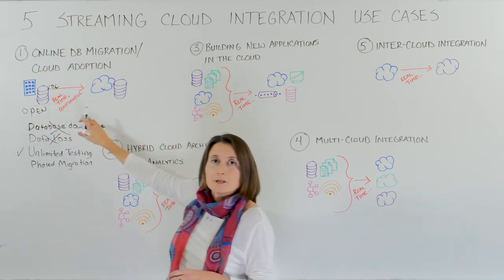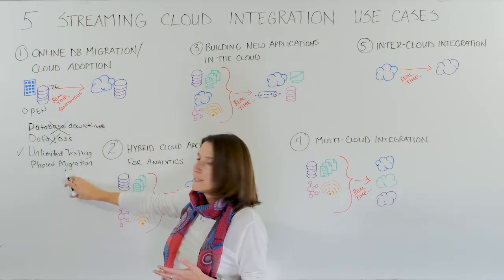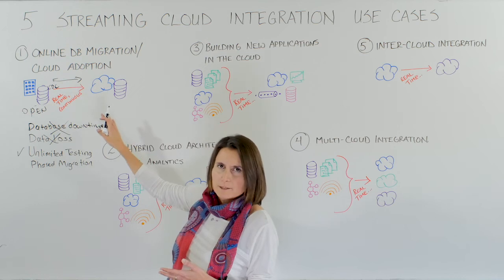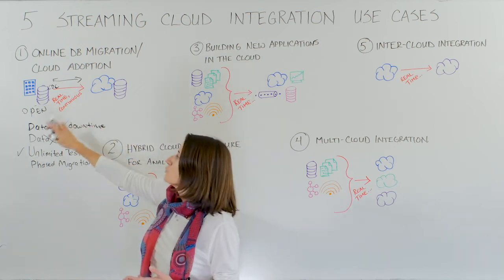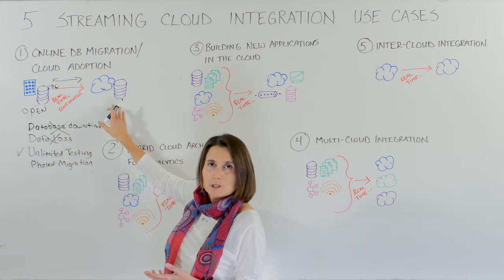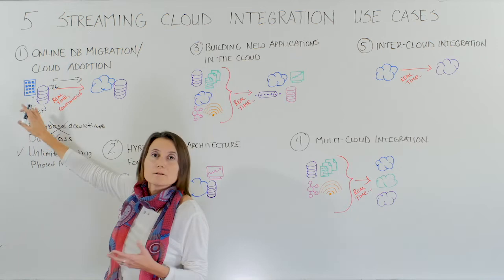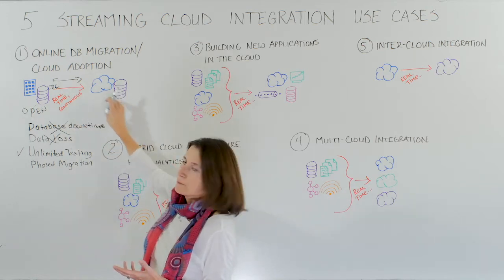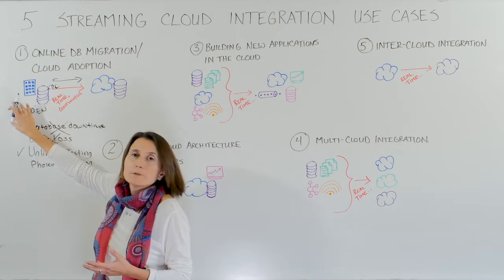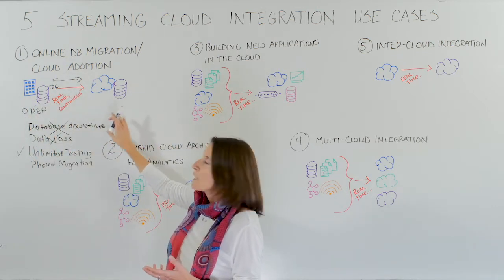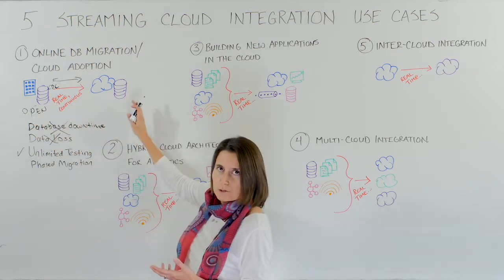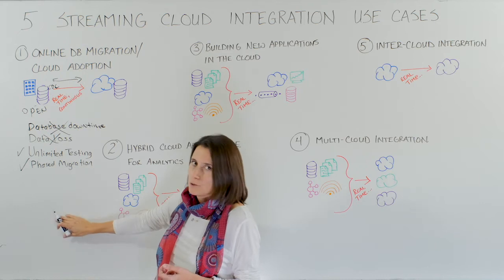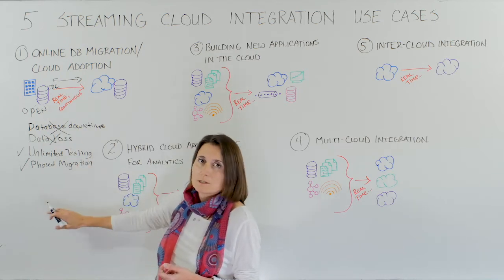You also have the ability to perform phased migration. Bidirectional data flow between the legacy system and the cloud system allows you to have users on both sides. You can move some users to the cloud database while others remain on the legacy system, and the streaming data integration solution keeps both sides in sync. You can then gradually move all your users to the cloud database, which is another way to minimize risk for mission-critical systems.